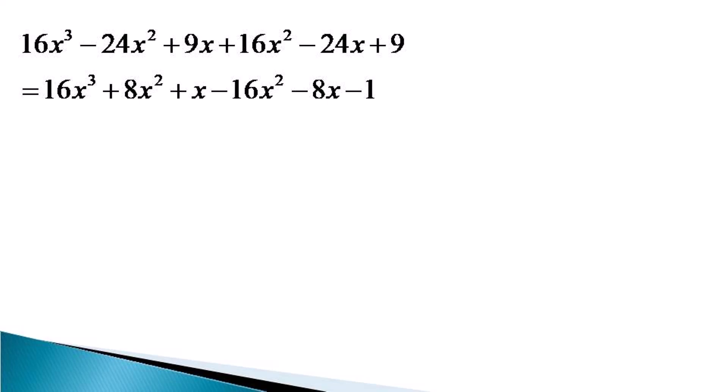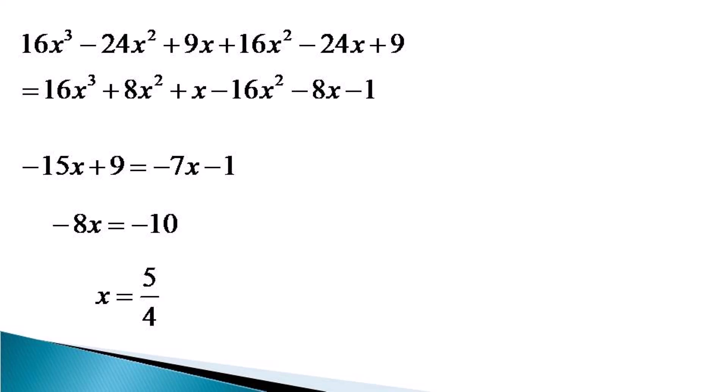In this equation, the cubic and square terms cancel luckily from both sides. The resulting equation becomes −15x + 9 equals −7x − 1, or −8x equals −10, giving the value of x equal to 5/4. The use of componendo and dividendo has made the solution really easy.